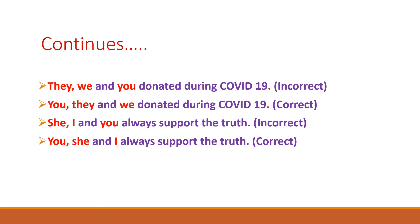Moving to the next example with the same rule: 'they, we and you donated during COVID-19'. Donating is a good action. Hence the sequence of pronouns follows code 231 — first second person, then third person, and finally first person. So 'they, we and you donated during COVID-19' is the incorrect expression, whereas 'you, they and we donated during COVID-19' is the correct expression.